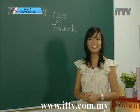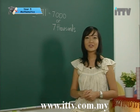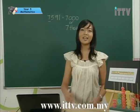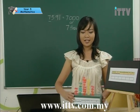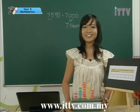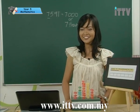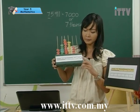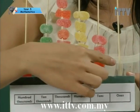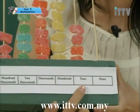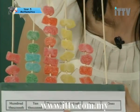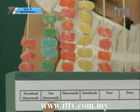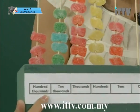Going back to our question earlier, the price of the property is 358640 ringgit. The place value and the digit value of the numbers are shown using a candy spike abacus here. Let's take a look at the place values. We have zero ones, four tens, six hundreds, eight thousands, five ten thousands, and three hundred thousands.